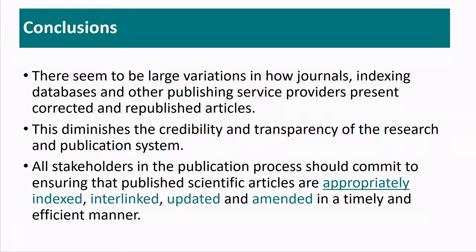So the conclusion from our study seems to be that there is a large variation in how journals, indexing databases, and other publishing services like Crossref provide us with information about these articles. The user, when they come and search, would get three identical articles — one of them would be retracted, one republished, and one would be a notice which may not be indexed as a notice but as something else. This diminishes the credibility and transparency of this important correction of literature. Our argument and advice is that if we are going this way, then we have to appropriately index, interlink, update, and amend these changes in literature.